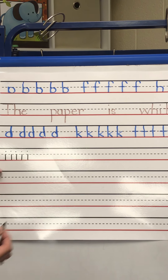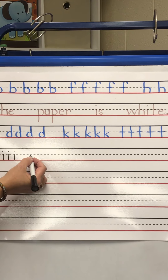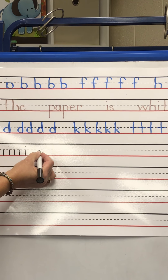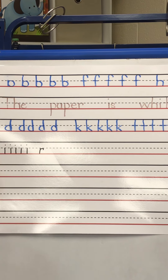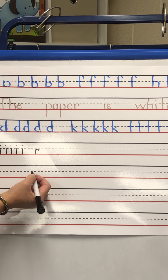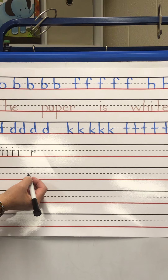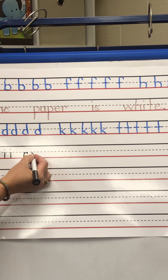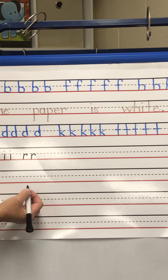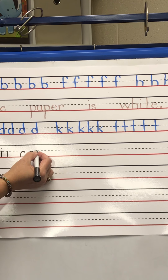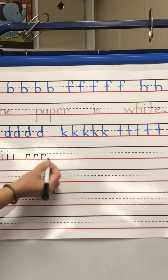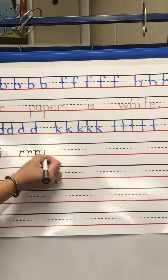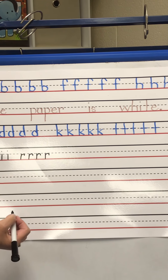Now we're going to practice R. R starts on the dotted line - little line down, back up with a bump. It does not start on the red line, it starts on the dotted line. Little line down, back up with a bump. Another lowercase R - little line down, back up with a bump. Another lowercase R - little line down, back up with a bump.